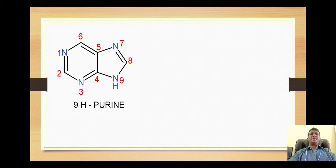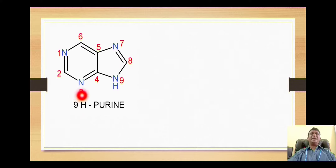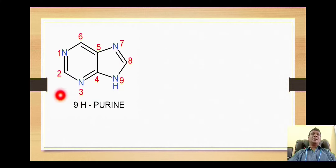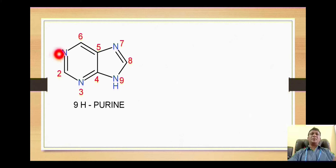Purine is a bicyclic ring system where a six-membered heterocycle pyrimidine is attached with a five-membered heterocycle imidazole. The numbering system for purine starts with the pyrimidine ring first. This nitrogen is number 1, then 2, 3, 4, 5, and 6.